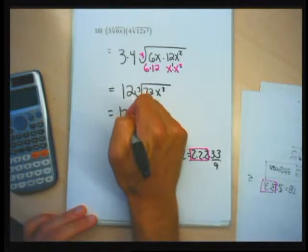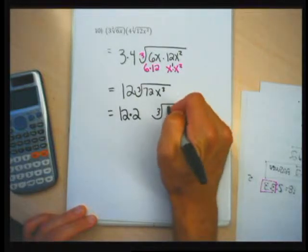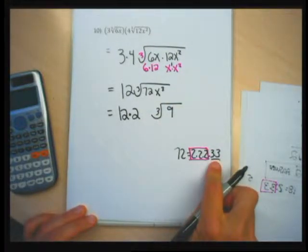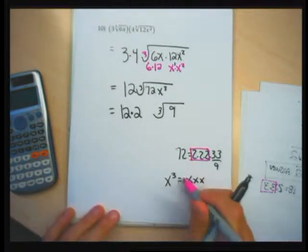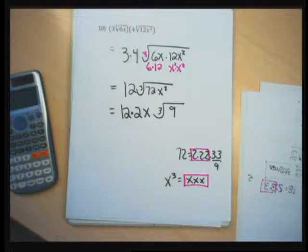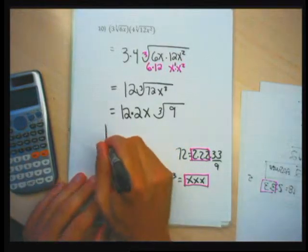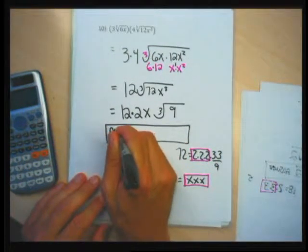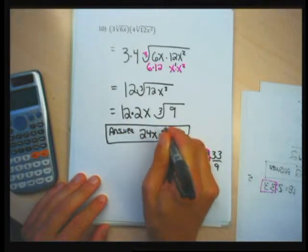I have a 12 already out in front, I bring out a 2, and have a 9 under the cube root. For x cubed, expanding into 3 x's gives one group of 3, so one x comes out in front and nothing remains under the radical. Multiplying 12 times 2 gives 24. So the answer is 24x times the cube root of 9.